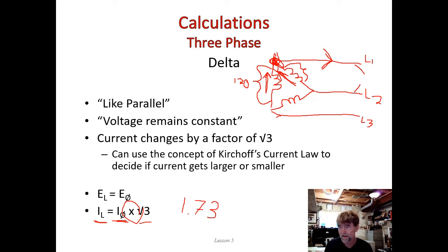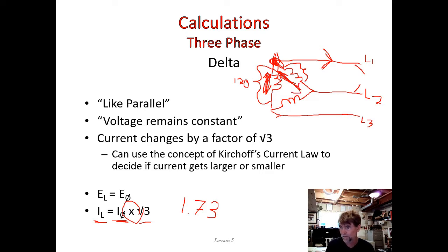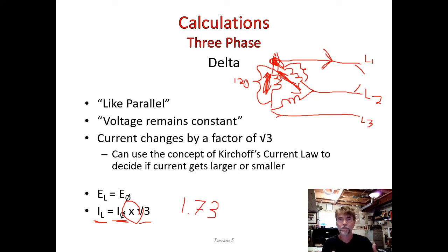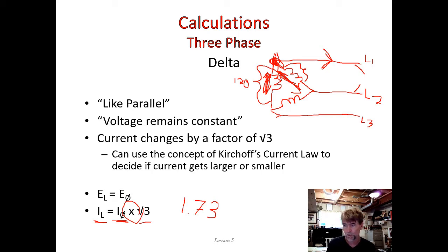The reason it's not double is because the two arrows I drew through the two coils are not entirely accurate — those currents are not flowing into the node all the time simultaneously. Sometimes one of those currents might actually be flowing in the other direction. If we drew the sine waves separated by 120 degrees, we'd see that sometimes phase A is positive while phase B is negative.